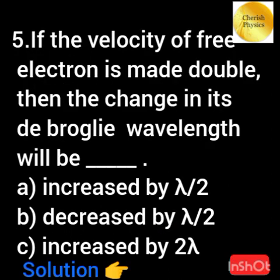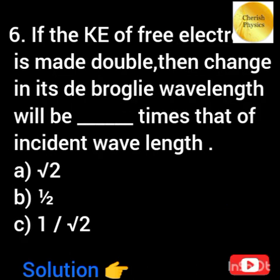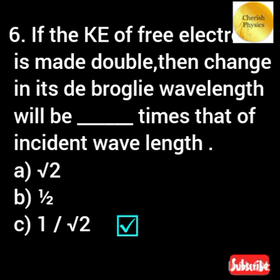If the velocity of a free electron is made double, what is the change in its De Broglie wavelength? If the kinetic energy is made double, what is the change in the De Broglie wavelength?